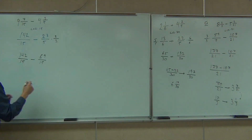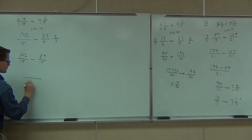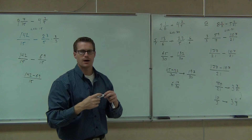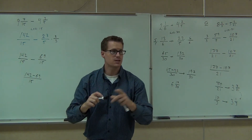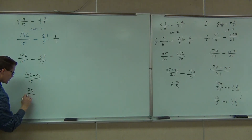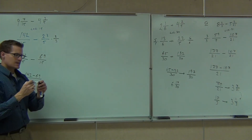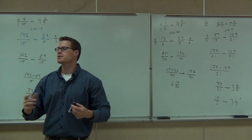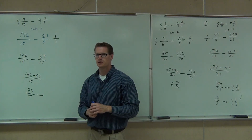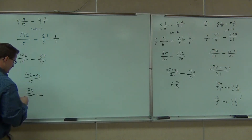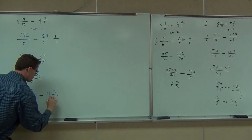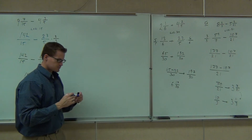Now that we have the LCD, let's combine those fractions. 142 minus 69 — what are you going to get out of that? 73. And lastly, if I give it to you as a mixed number, I want it back as a mixed number. 73 over 15 — we are going to get 4 and 14 over 15. Beautiful. And that's the correct answer.